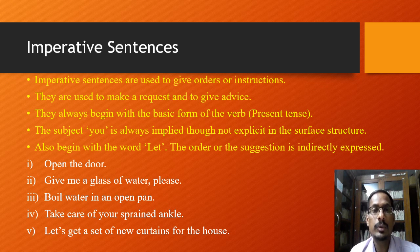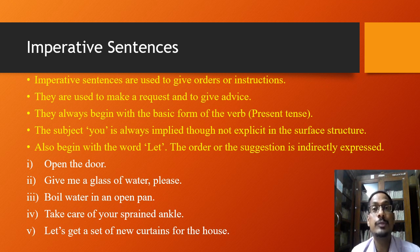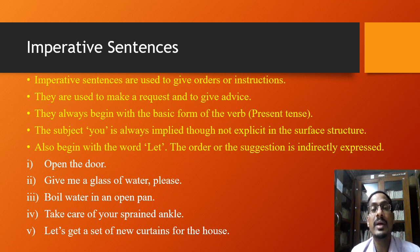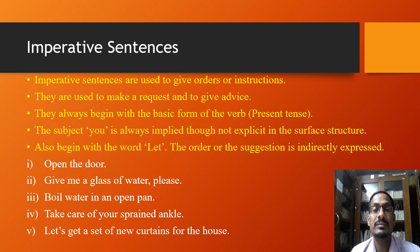The third type of sentence according to function is the imperative sentence. Imperative sentences are used to give orders, instructions, requests, or advice. They always begin with the basic form of the verb in the present tense. Although they do not have explicit subjects in the surface structure, the subject 'you' is always implied or hidden because imperatives are addressed to the second person. Sentences that begin with 'let' are also imperative sentences, where the order or suggestion is indirectly expressed.